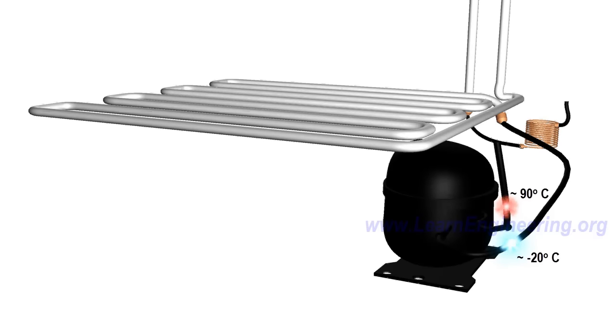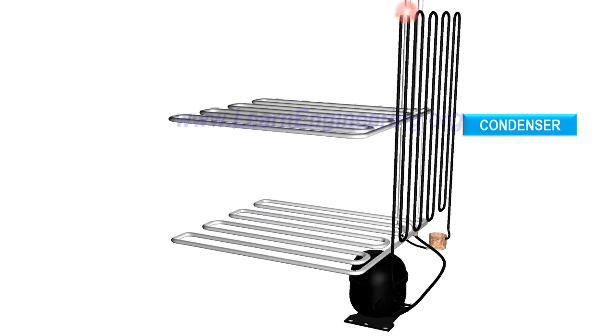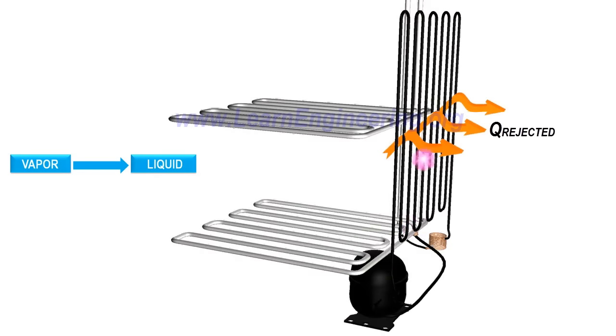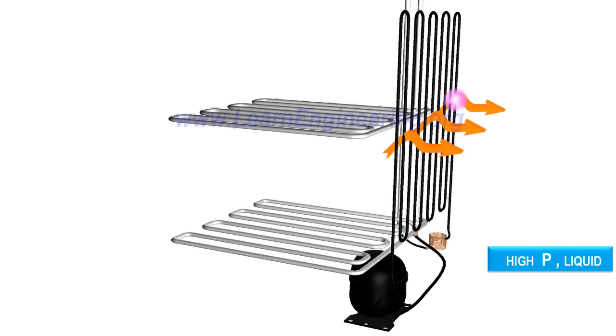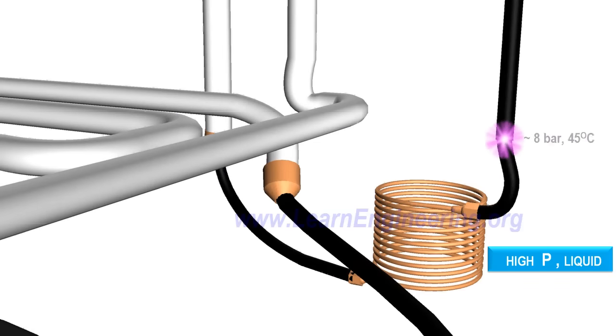Now the refrigerant is high pressure vapor. To convert it to liquid state, we are introducing another heat exchanger. This heat exchanger is fitted outside the refrigerator, so it will liberate heat to the surroundings. Vapor will get condensed to liquid and temperature will come down to normal level. So the refrigerant is back to its initial state again: high pressure liquid.